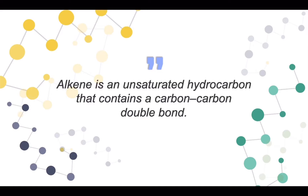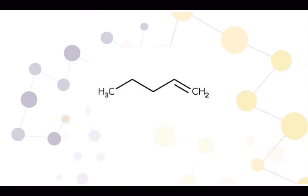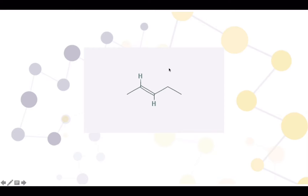So we get into the isomers. First we have the pentene structure with the double bond between the first carbon and the second carbon. We read it from the right side and we name it 1-pentene. Next, we can also put the double bond between the second carbon and the third carbon, named as 2-pentene. When the atoms are placed on different sides, we name it trans-2-pentene.